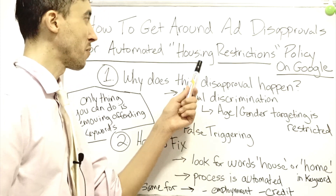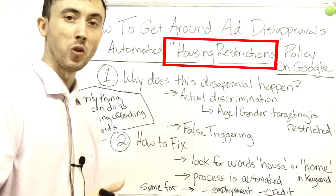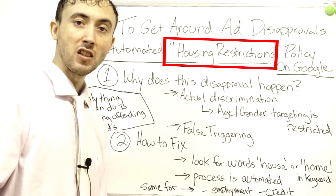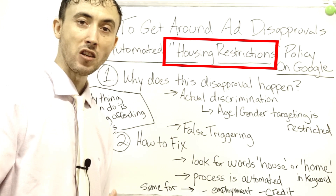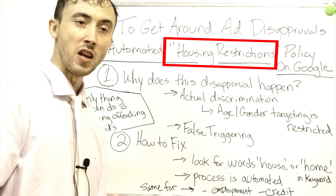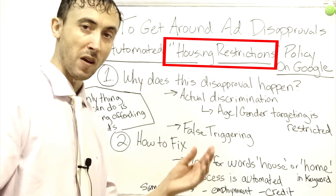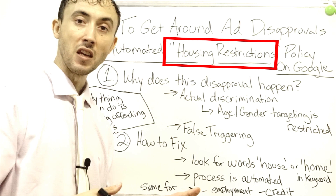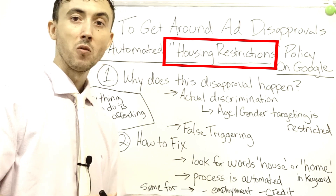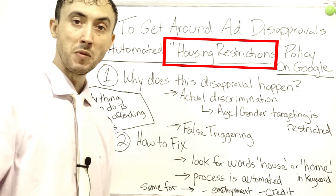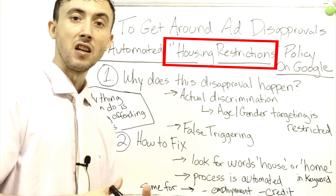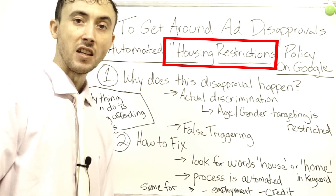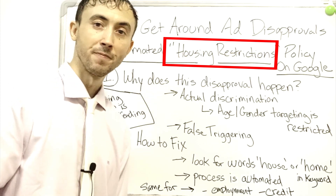That's everything I can tell you about the housing restrictions, and credit and employment restrictions, that Google now has with their Google Ads system. If you have any questions, you can reach out to my site and ask — I can provide a free audit on your particular situation. You can also check out my other videos and my money-making PPC strategies blog, where you can learn how to actually make money setting up PPC ads for your business. I hope you also subscribe to my channel — thank you.